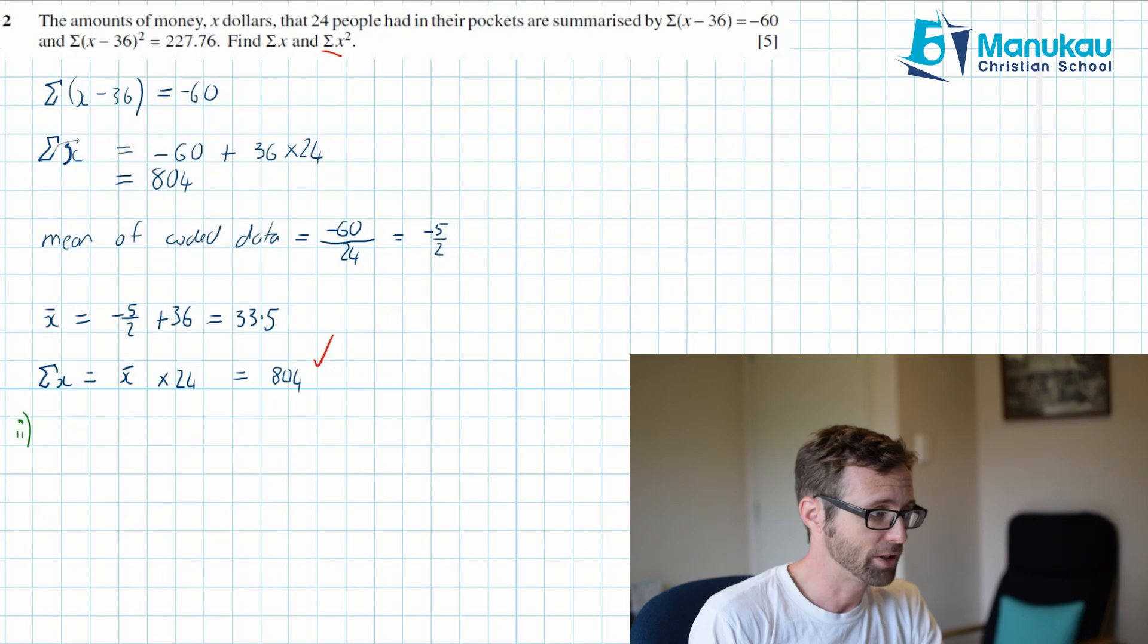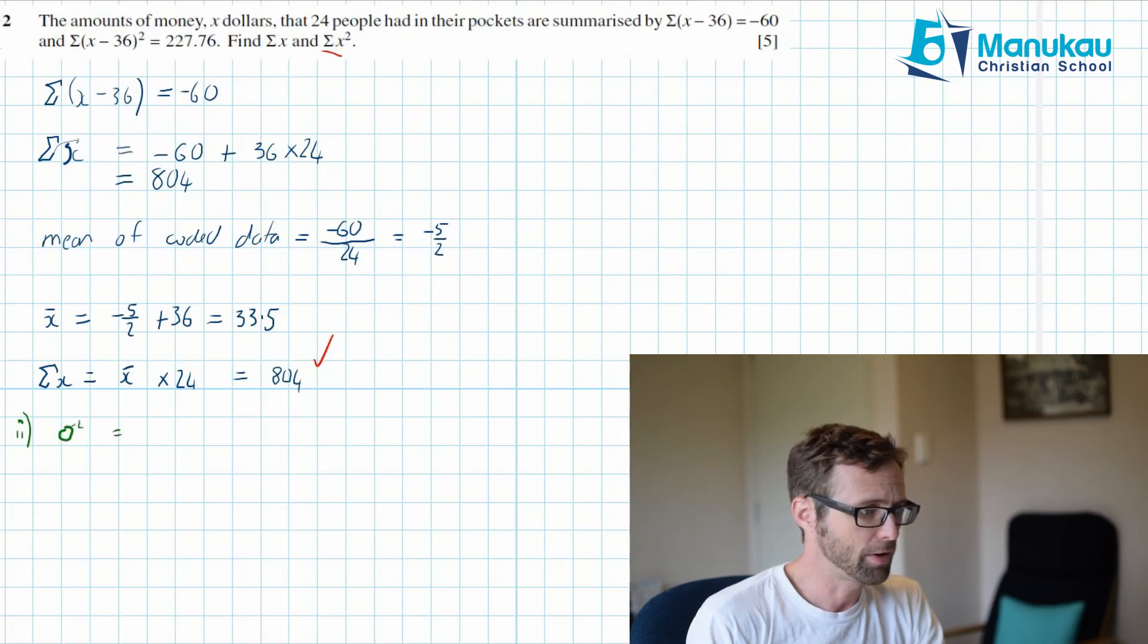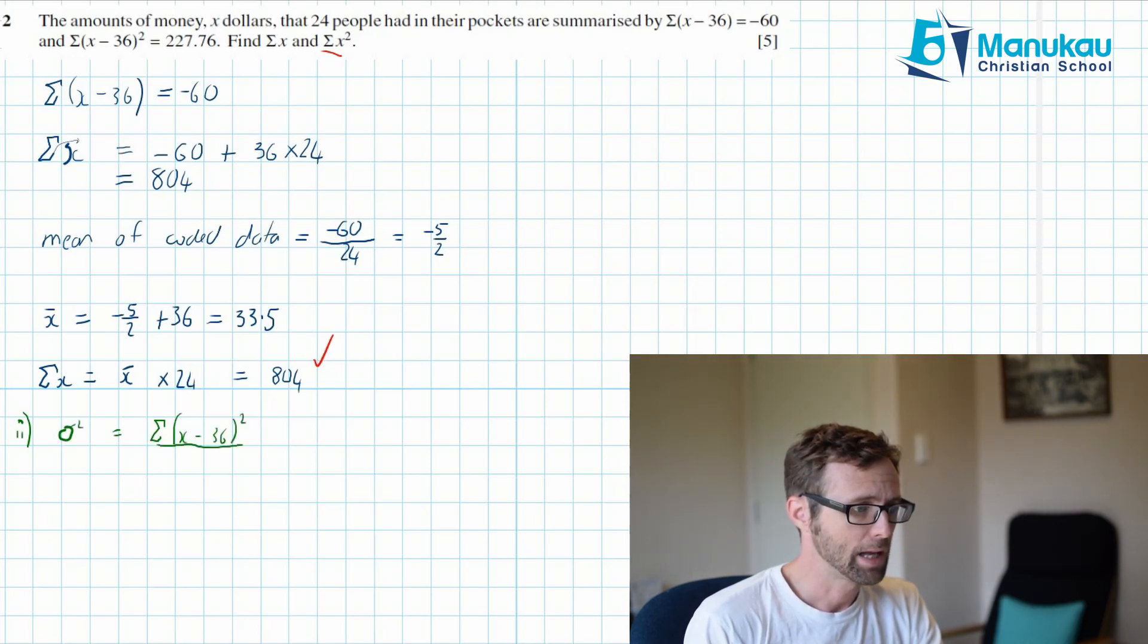So standard deviation or the variance. Maybe we could even work out the variance. The variance is equal to the sum of the X, the coded data squared, X minus 36 squared, and we put that over our sum of the frequency, which is 24, and then we subtract the mean of that coded data. And then we can work this out.